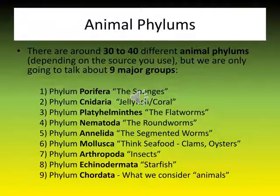In this chapter, we will discuss more on the phylum level. Phylum is the next rank after kingdom — it is more specific than kingdom but less specific than class. There are almost 30 to 40 different animal phylums, but here we are going to discuss the nine major groups.